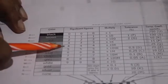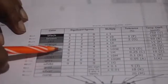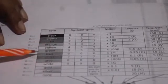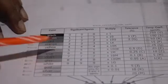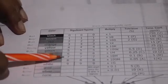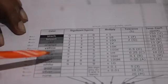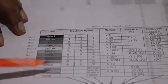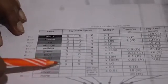Continuing the color code table: yellow corresponds to 4, green to 5, blue to 6, violet to 7, gray to 8, and white to 9.